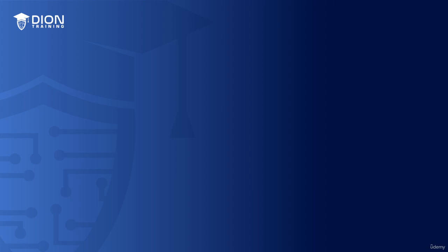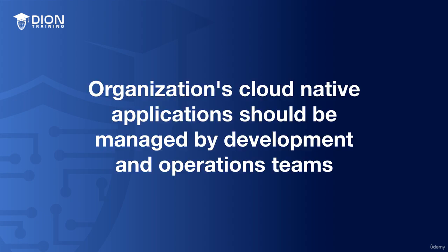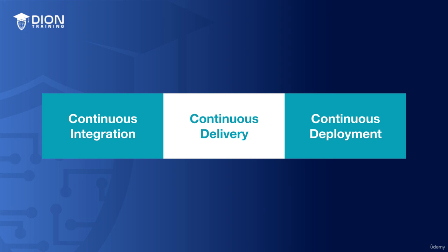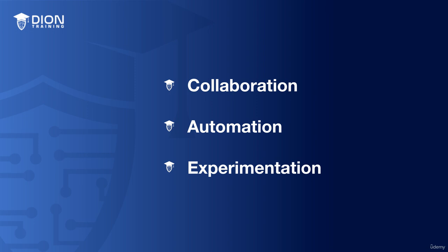You may be wondering how these cloud applications are actually managed on a daily basis. Your organization's cloud-native applications should be managed by your development and operations teams who work together to ensure that these applications are being deployed and running effectively. This typically involves the use of DevOps practices, which are designed to improve collaboration between the development and operations parts of the DevOps process. DevOps is a culture, a mindset, and a set of practices designed to help organizations deliver higher quality software faster and more efficiently. DevOps is based on the three principles of continuous integration, continuous delivery, and continuous deployment. It also emphasizes collaboration, automation, and experimentation.